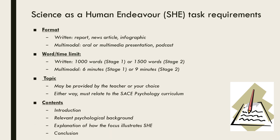Your task should contain four main components: an introduction, some relevant psychological background, an explanation of how your topic illustrates the interaction between science and society, and a conclusion. Let's look a bit more closely at what each of these components should contain.